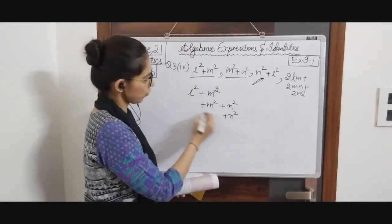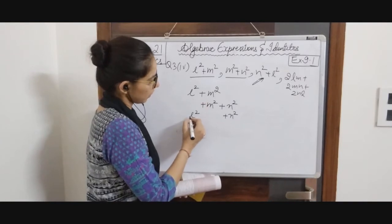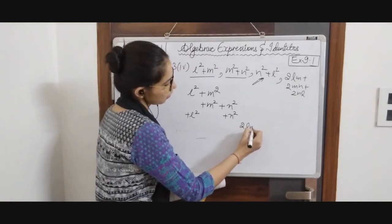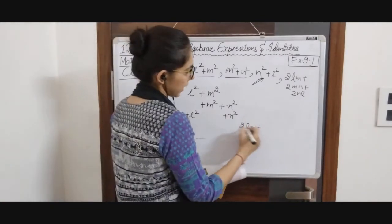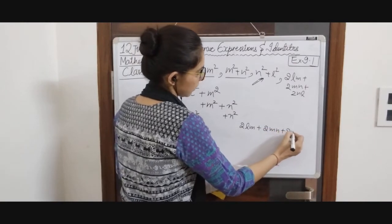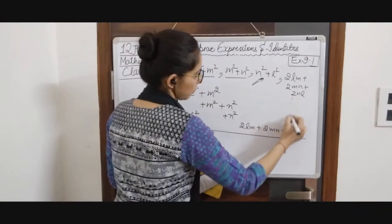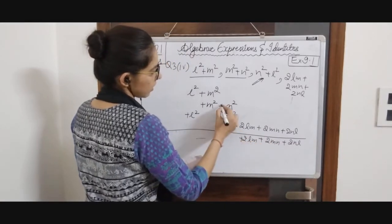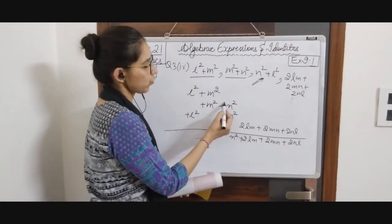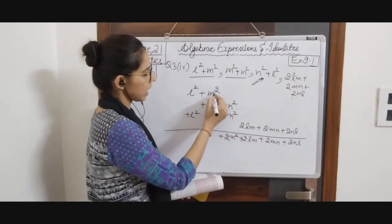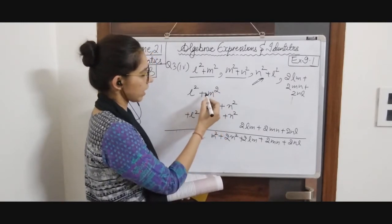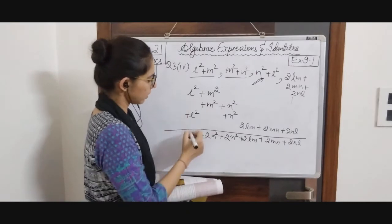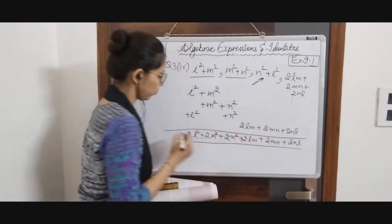N² will be written here because we have like terms for N². Then 2LM and 2MN — there is no like term for 2LM so we write them on the side, along with 2NL. Now adding column-wise: N² has coefficient 1+1 = 2, so 2N². Similarly M² gives 2M² and L² gives 2L². So this is going to be our answer.